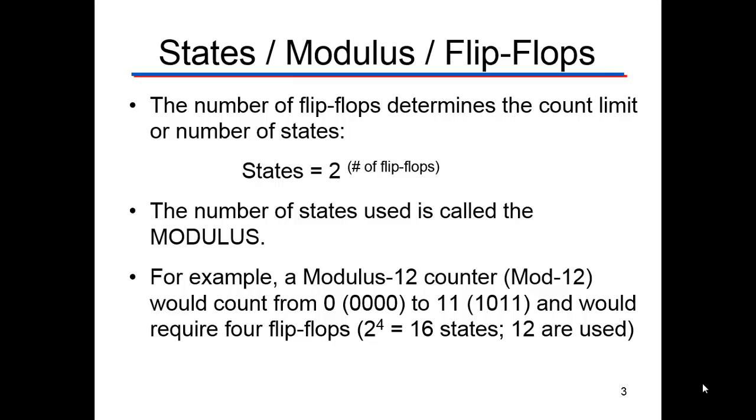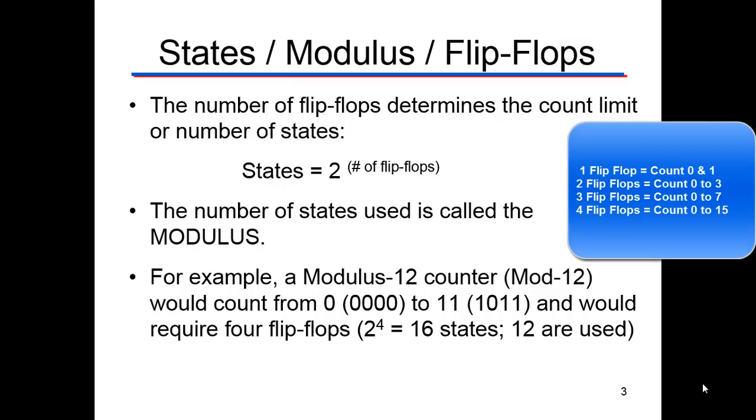The number of states in a flip-flop determines the count limit. If we want to count to one, we only need one flip-flop, two to the one, then we can have the range zero and one. If we want to count to three, we have to use two flip-flops, two to the two. We have four states then, and we can count from zero to three.